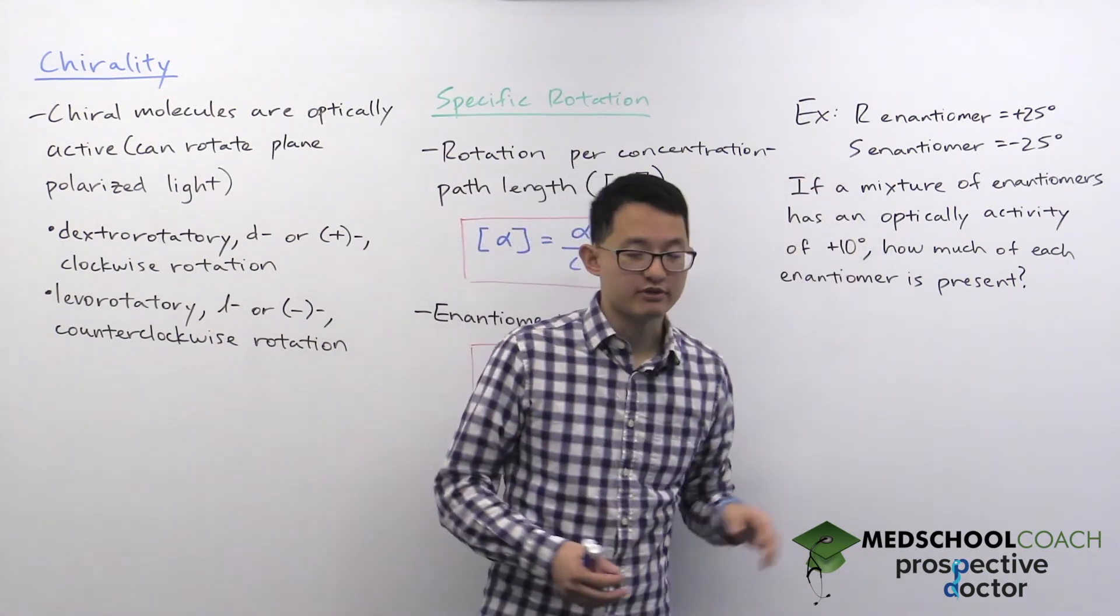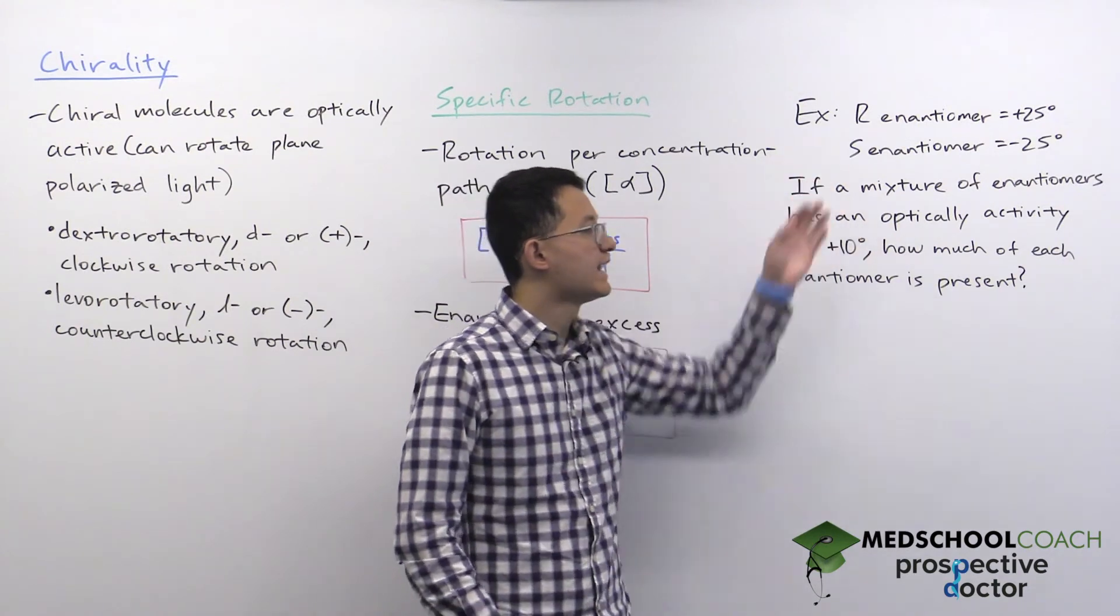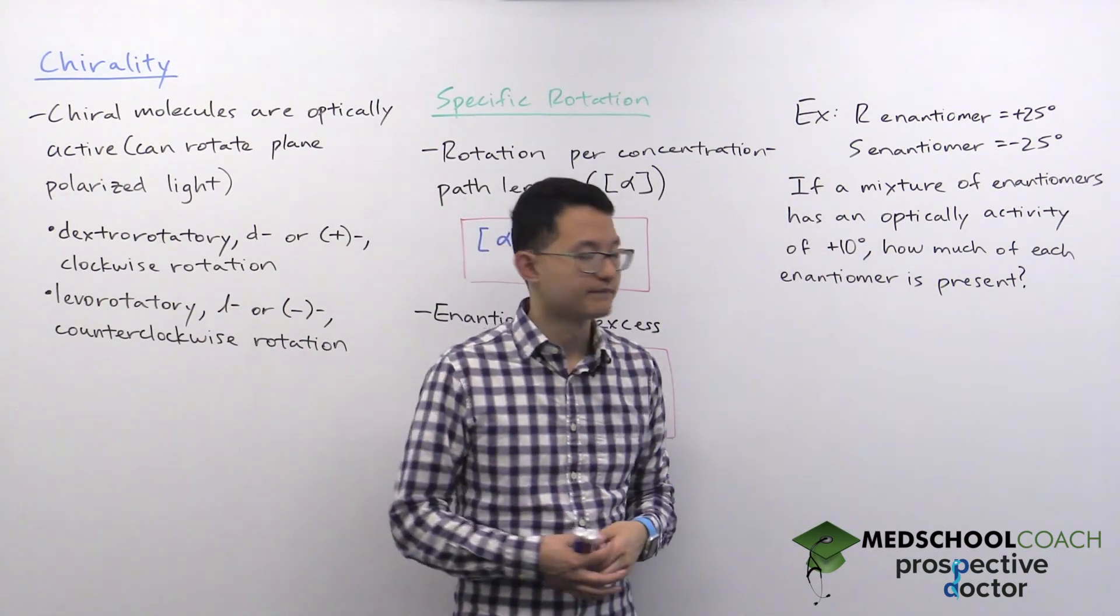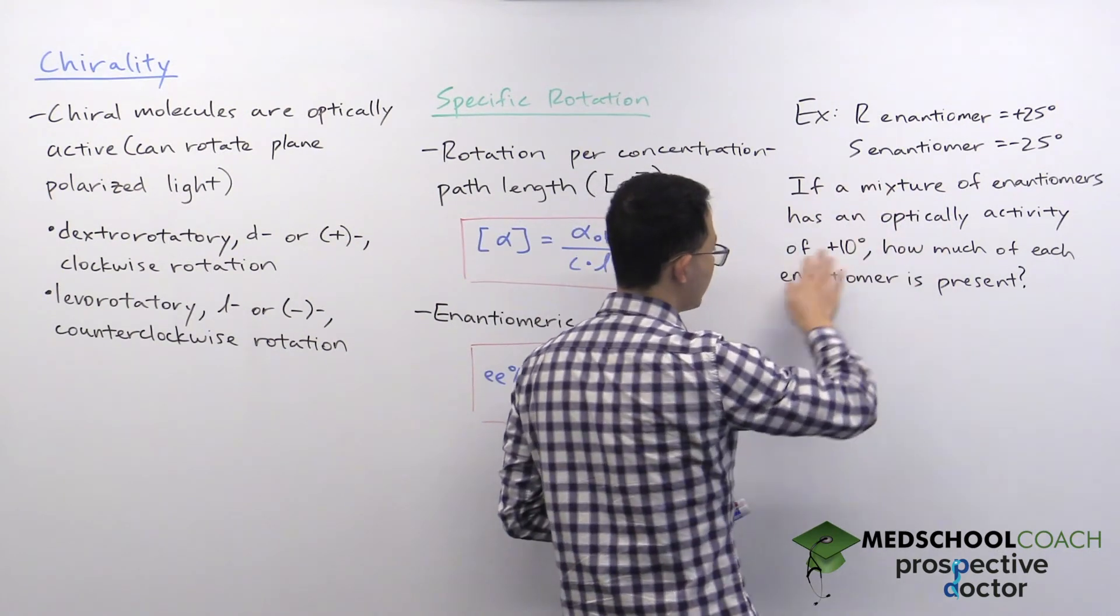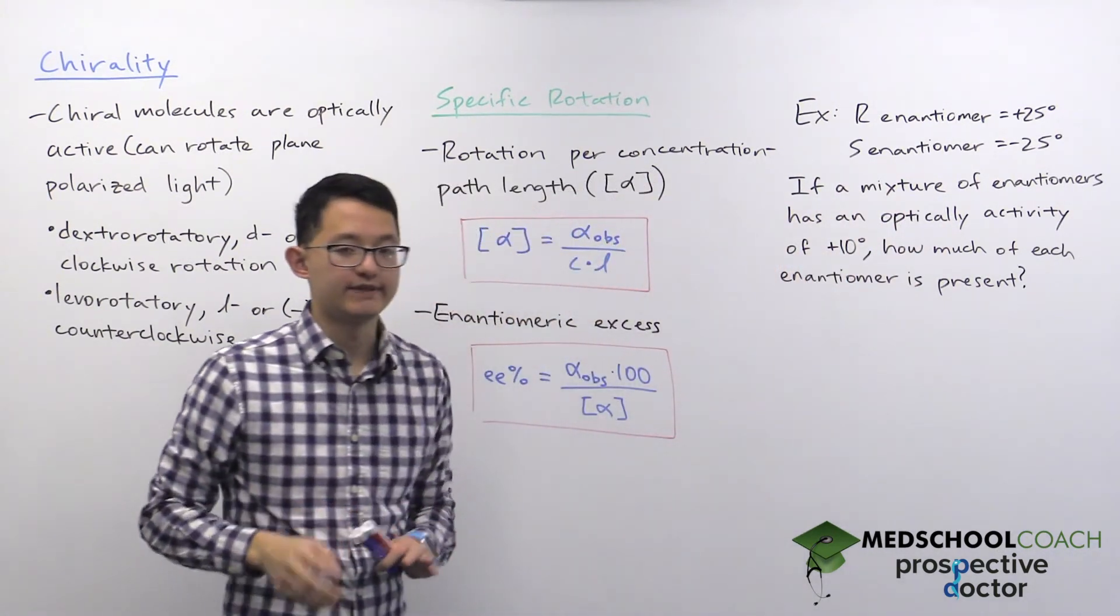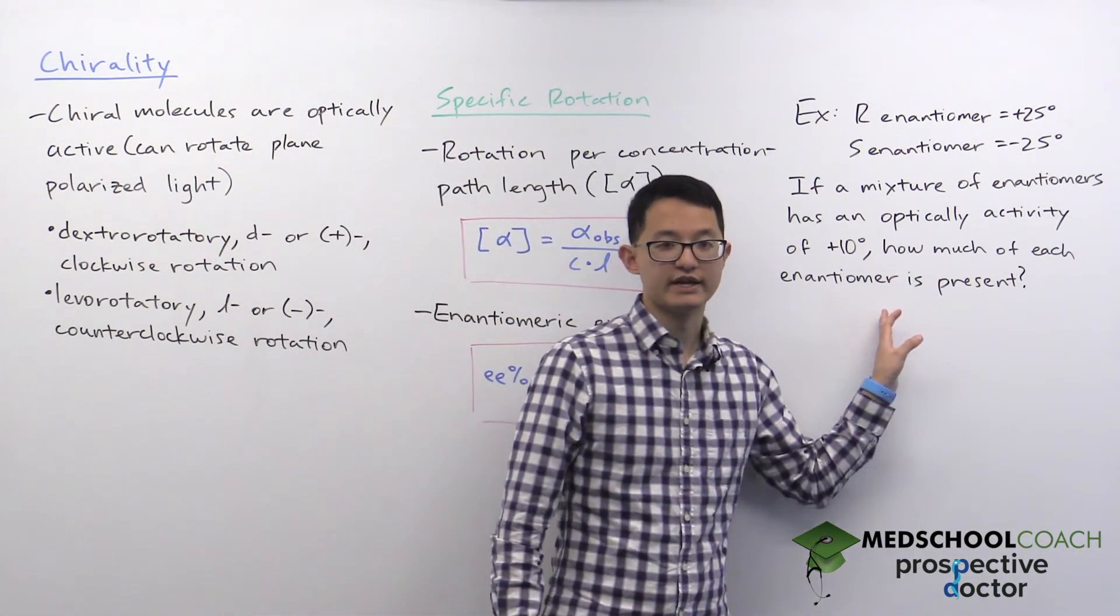The S enantiomer is going to be levorotatory with a specific rotation of negative 25 degrees. In this case, we're going to have a mixture of enantiomers that has an optical activity of positive 10 degrees, and we want to know how much of each enantiomer is present.